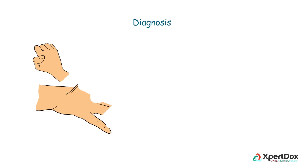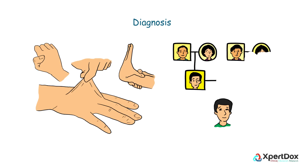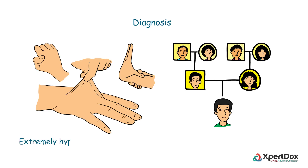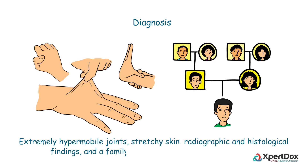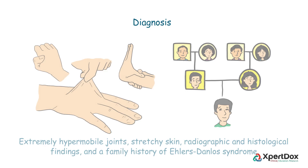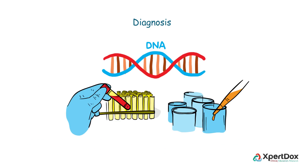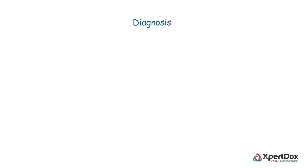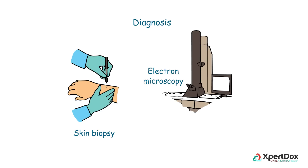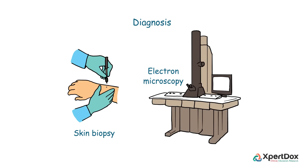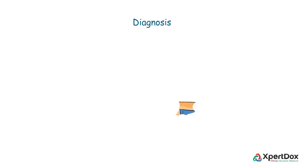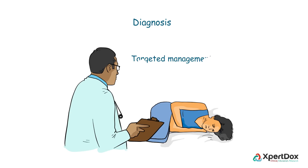Diagnosis is based on characteristic signs and symptoms, and quite often a detailed family history. Extremely hypermobile joints, stretchy skin, radiographic and histological findings, and a family history of Ehlers-Danlos Syndrome are often sufficient to frame a diagnosis. Genetic tests can confirm the diagnosis in 12 more rare forms of EDS, but there is no such test for hypermobility EDS. Skin biopsy with electron microscopy can play a role in the decision process of whether and when to perform genetic testing. Correct diagnosis is imperative to allow targeted management, prenatal diagnosis, and family screening.